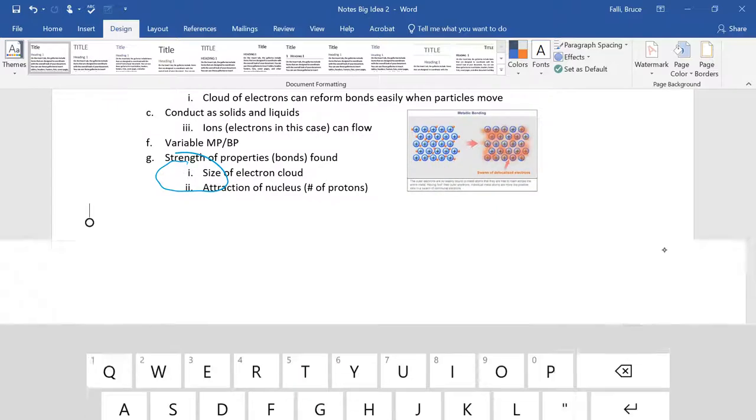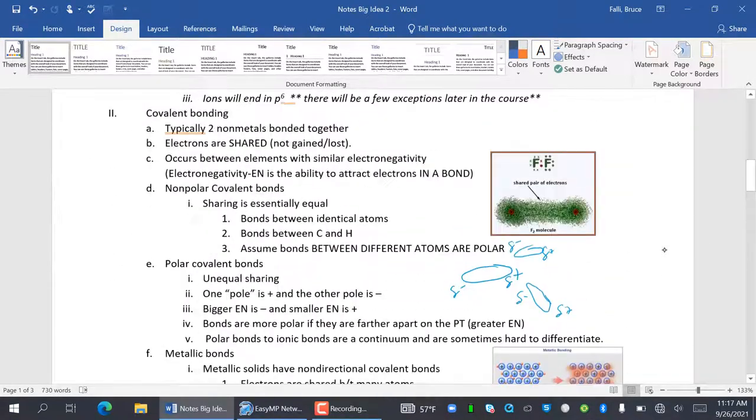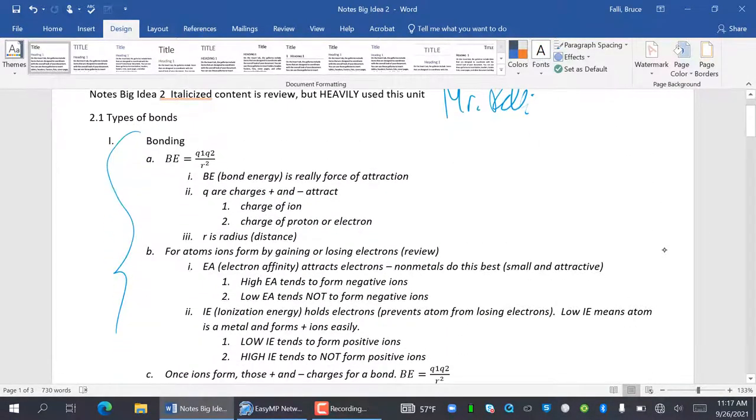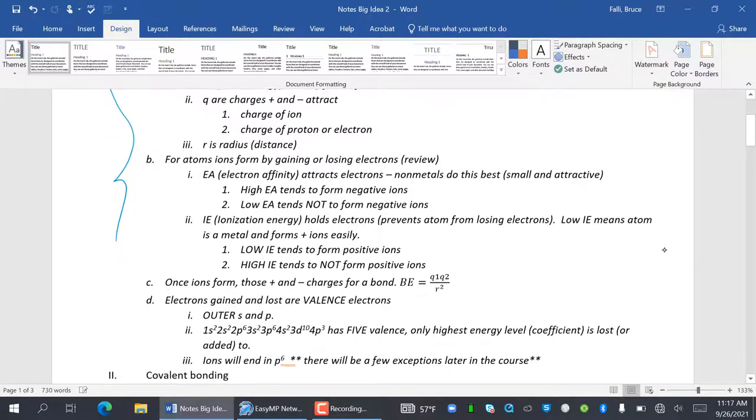Coulomb's Law. You've got to learn to love Coulomb's Law. Coulomb's Law is bond energy is Q1, Q2 over radius squared. So BE is bond energy. It's really the force of attraction. You'll often see that as an F.